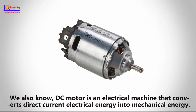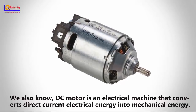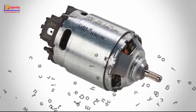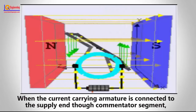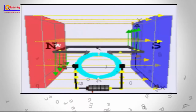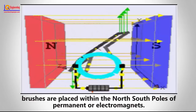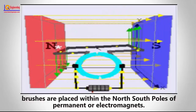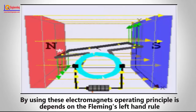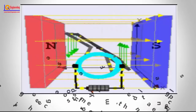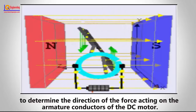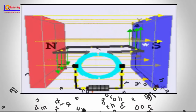A DC motor is an electrical machine that converts direct current electrical energy into mechanical energy. When the current-carrying armature is connected to the supply through the commutator segments, brushes are placed within the north-south poles of permanent or electromagnets. The operating principle depends on Fleming's left-hand rule to determine the direction of the force acting on the armature conductors of the DC motor.